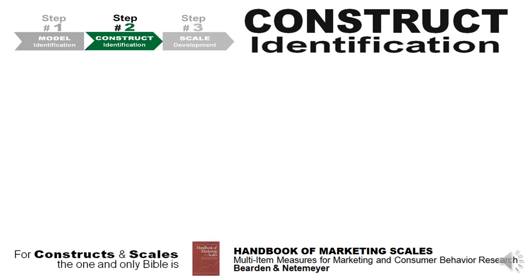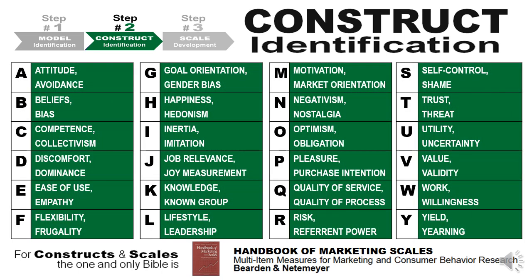Coming to constructs, the Handbook of Marketing Scales by Bearden and Netemeyer is truly a bible for both constructs and scales. Two constructs per English alphabet are listed here. Look at the highlighted constructs and find interdependence: How does inertia inhibit the attitude to buy, and does this bear on purchase intention? What is the correlation between uncertainty and risk? If risk is reduced, does it enhance trust, and does enhanced trust increase the willingness to buy? Each of these questions forms the basis for hypothesis development.